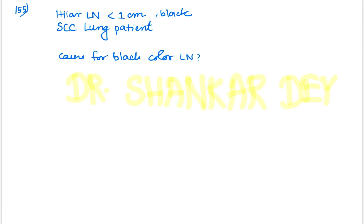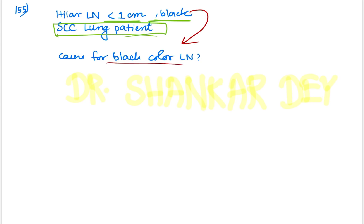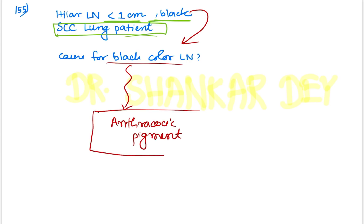Question 155: A patient of squamous cell carcinoma of the lung — hilar lymph node is less than one centimeter and black in color. The cause of this black color is anthracotic pigment. In anthracosis, lung carcinoma is common, as in pneumoconiosis. Anthracotic pigment is commonly found in coal workers.